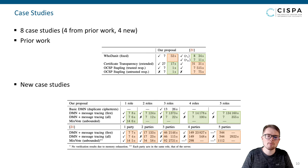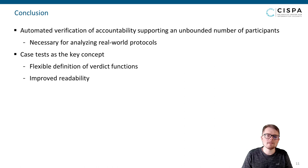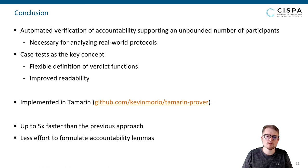In conclusion, we provide an automated verification technique for accountability supporting an unbounded number of participants. This allows us to extend the analysis of accountability properties to real-world protocols where the same party can be involved in multiple parallel sessions or the number of parties can change dynamically. By introducing case tests as a key concept, we are able to define verdict functions in a very flexible manner, which also improves readability as we may consider each case test as a specific kind of violation. Moreover, we extended Tamarin with the ability to automatically generate the set of verification conditions from case tests and accountability lemmas. Our case studies demonstrate that our approach is applicable to a wide variety of protocols — not only more general, but up to five times faster than the previous implementation, while the effort for specifying accountability lemmas is significantly reduced. Thank you for your attention.